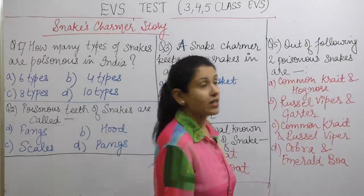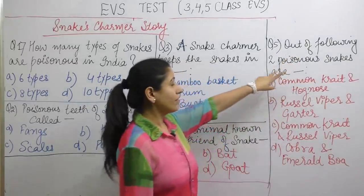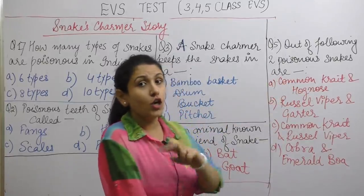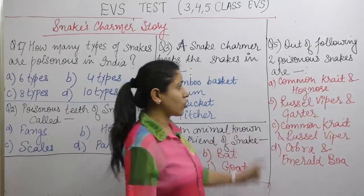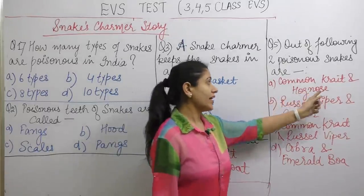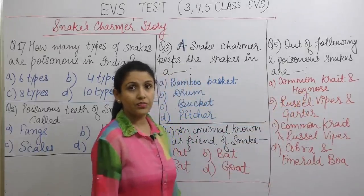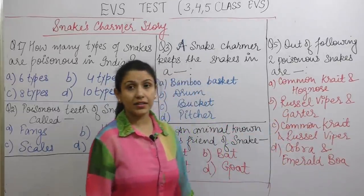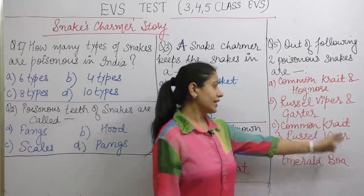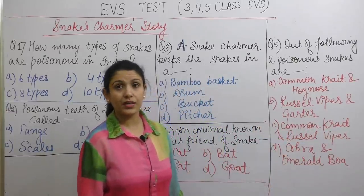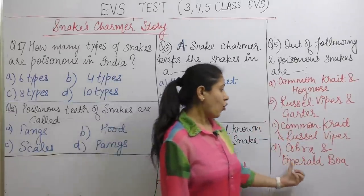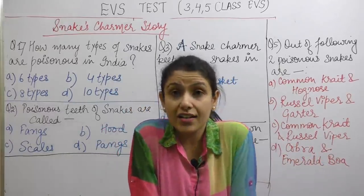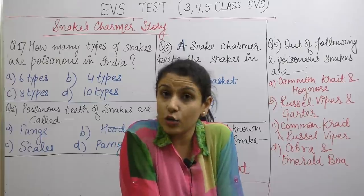Next question: Out of the following, two poisonous snakes are — first option: common krait and hog nose; second: russell's viper and gutter; third: common krait and russell's viper; fourth: cobra and emerald boa. Write your answer. This completes your 10 questions.